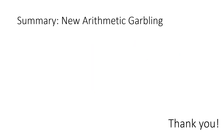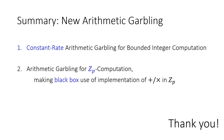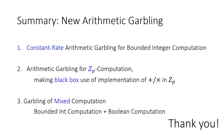To summarize, we have three results. First, constant-rate garbling for bounded integer computation from Paillier. Second, a garbling scheme for Z_p computation that is the first such scheme making black-box use of the underlying ring operations. Third, we can handle circuits with both arithmetic and general Boolean computation gates in a mixed computation model. This concludes my talk, thank you.